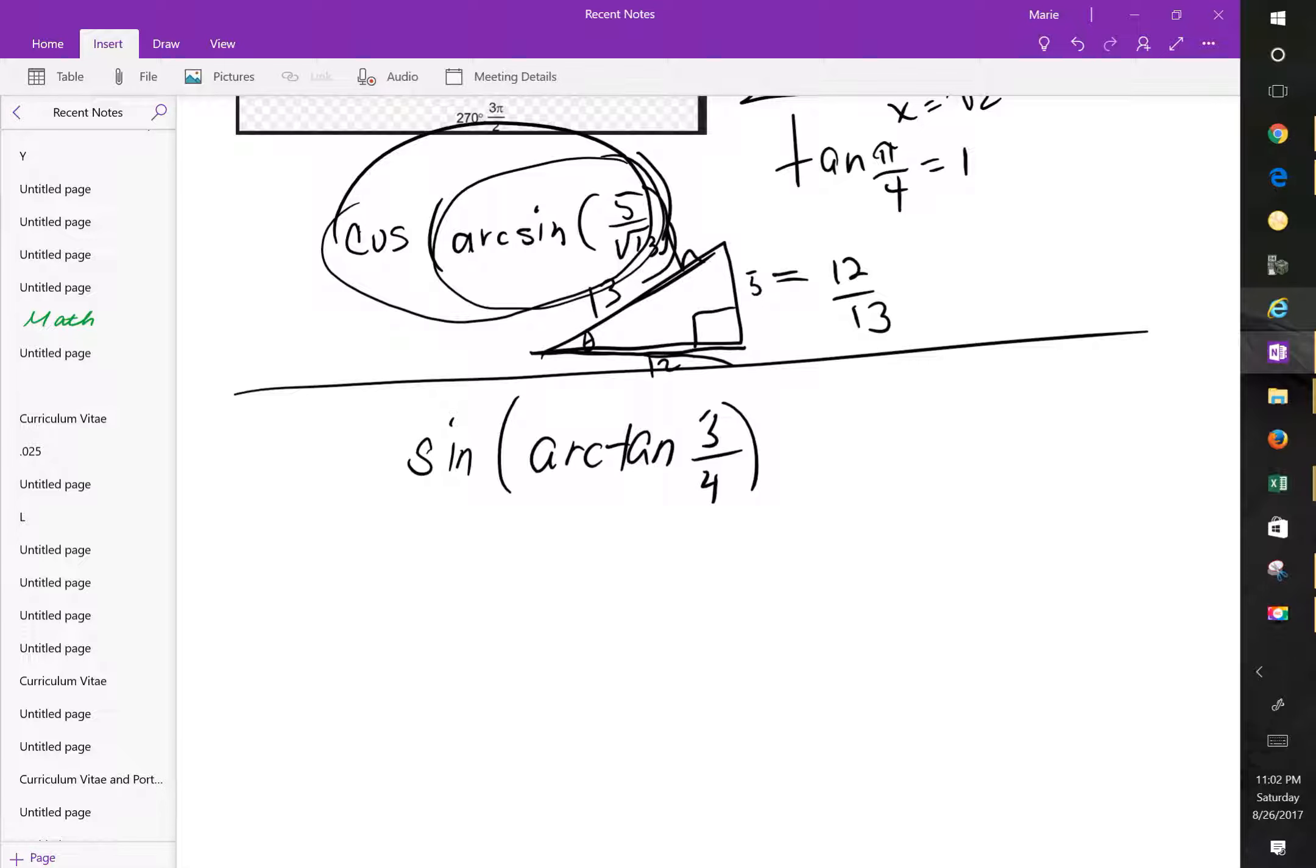Okay, so again, if I'm drawing the triangle for this, I'm thinking the 3, 4, 5 ratio comes to mind. So here's our 90 degree angle, and here we are with 3, 4, 5, with the hypotenuse over here. And again, if I'm looking at the arctan of 3 over 4, the sine of arctan 3 over 4 would have to be the 3 over 5. So this answer would be 3 over 5.